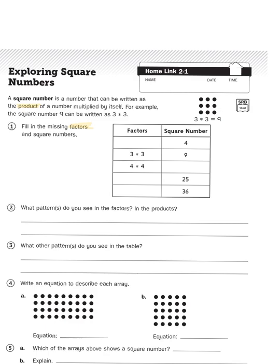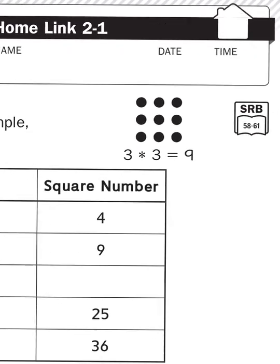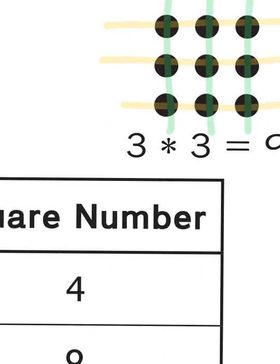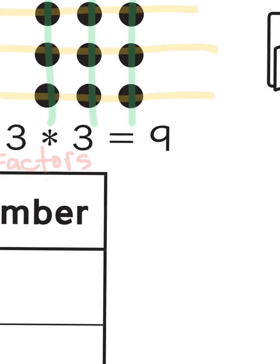For example, in this array up at the top, I have 3 rows, 1, 2, 3, and in each row they have 3 circles, 1, 2, 3. So I have a multiplication problem, 3 times 3 equals 9. So 3 times 3, those are my factors, and my square number or product is 9. So factors and product.